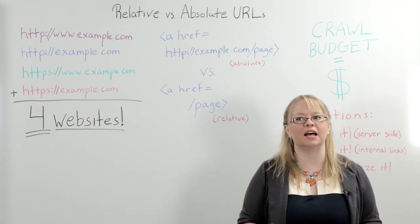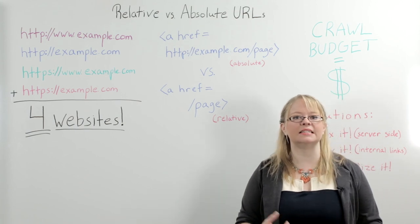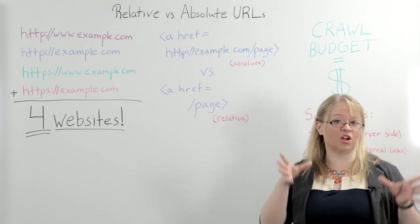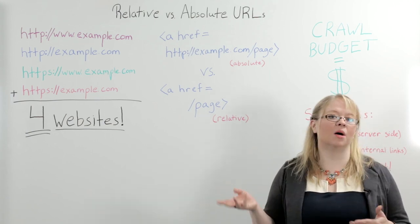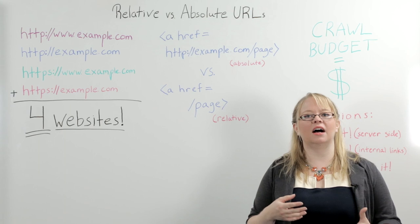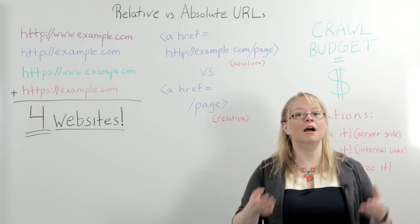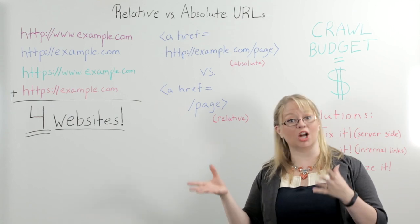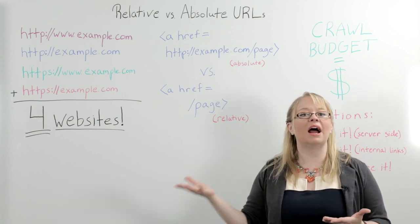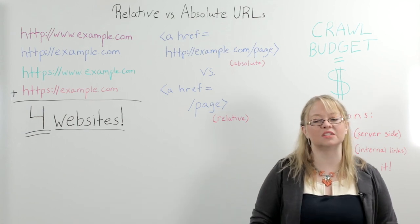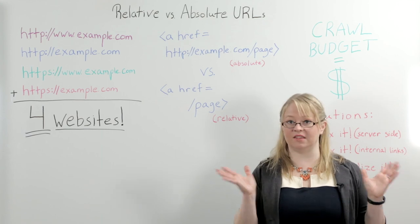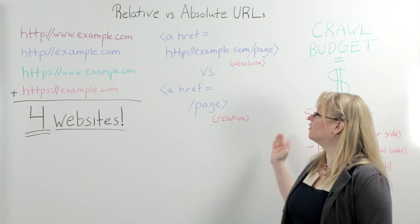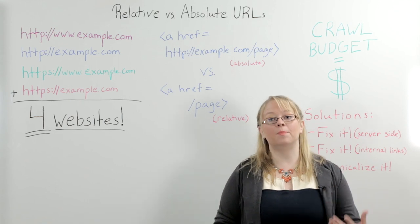Another reason why you might use relative URLs is that some content management systems — SharePoint is a great example — have a staging environment that's on its own domain, like examplestaging.com. The entire website is basically replicated on that staging domain. Having relative URLs means that the same website can exist on staging and on production without having to go back and recode all of those URLs. So it's more efficient for your web development team, and those are perfectly valid reasons. Don't yell at your web dev team if they've coded relative URLs — from their perspective, it is a better solution.